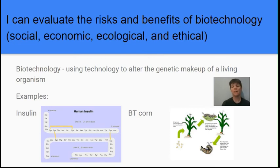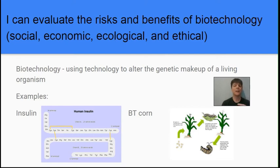Another example of biotechnology is BT corn. BT corn is corn which contains a gene from a bacterium, and this bacterial gene allows the corn to produce a toxin that is deadly to an insect pest which would normally cause a lot of problems for the corn. The corn kills the insect pest and is much stronger — resistant to pest damage. There is a benefit to the farmer, and potentially a social benefit because farmers would not need to use as many herbicides or pesticides. However, there is a potential negative ecological impact because other insect species will also be negatively impacted by a toxin deadly to insects.